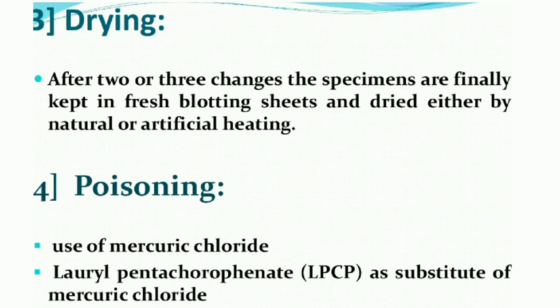After drying, the next step is poisoning — means spraying or applying some chemicals. The most commonly used preservant chemical is mercuric chloride. Poisoning means to spray some pesticide which prevents the growth of bacteria and fungus on the plant specimen. Also, lauric pentachlorophenate (LPCP) is used as a substitute for mercuric chloride. Any one of these two will be sprayed or the specimens dipped in them to prevent the attack of fungus and bacteria.